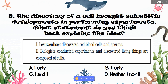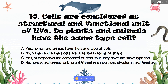Number ten: Cells are considered as a structural and functional unit of life. Do plants and animals have the same type of cell? A. Yes, humans and animals have the same type of cells. B. No, humans and animals are different in terms of shape. C. Yes, all organisms are composed of cells, thus they have the same type. D. No, human and animal cells are different in terms of shape, size, structures, and functions. The correct answer is letter D.